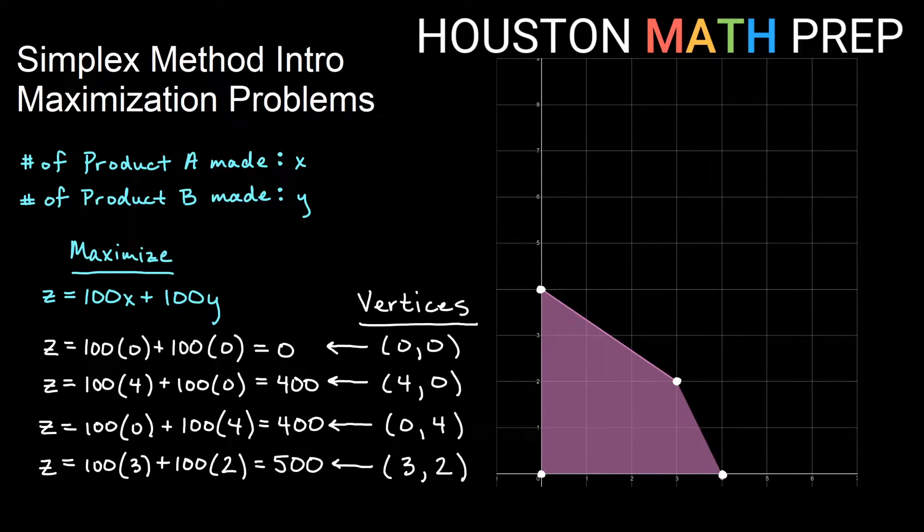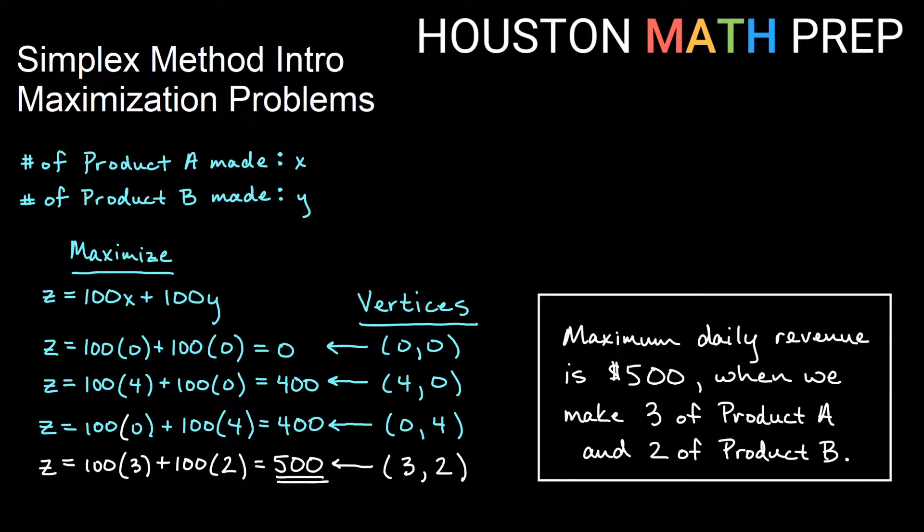And we plug that in and we get a bunch of values. And if we're trying to maximize something, then we look for simply the biggest value that we get. And in this case, it's the bottom one. If I plug in 3 for x and 2 for y, in other words, the point 3 comma 2, which is a vertex, then we get 500 and that's the most that we get out of all the vertices. And so we know that our maximum daily revenue is $500 and we would make then 3 of product A and 2 of product B every day to maximize our revenue for our factory.